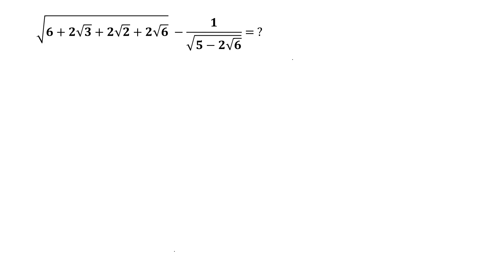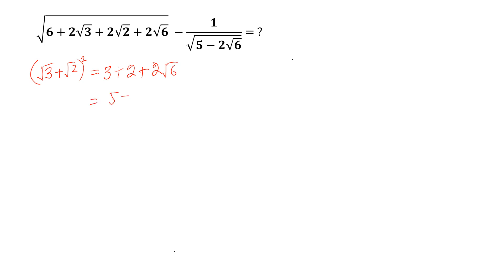The first step is to take (√3 + √2) whole square, which equals 3 + 2 + 2√6, and if we simplify it a little more we can write it as 5 + 2√6. Let this be equation 1.